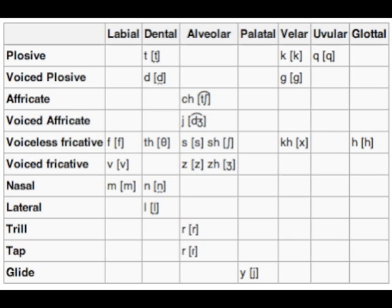Let's start with the labial voiceless fricative, F. It's very simple, we have that in English. We also have V, so 'van', and M, which is the nasal labial — the labial is just the lips. Fricatives are where you have air constantly going through the mouth, so F, TH, S, SH — they all sound sort of the same. And nasals are where the air goes through the nose, so 'mm'.